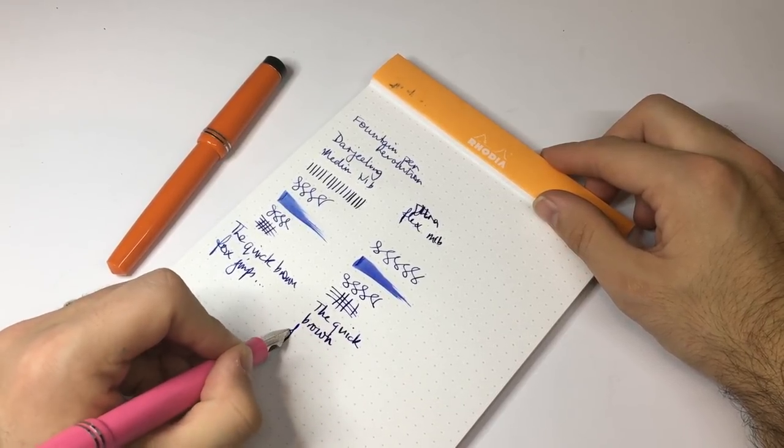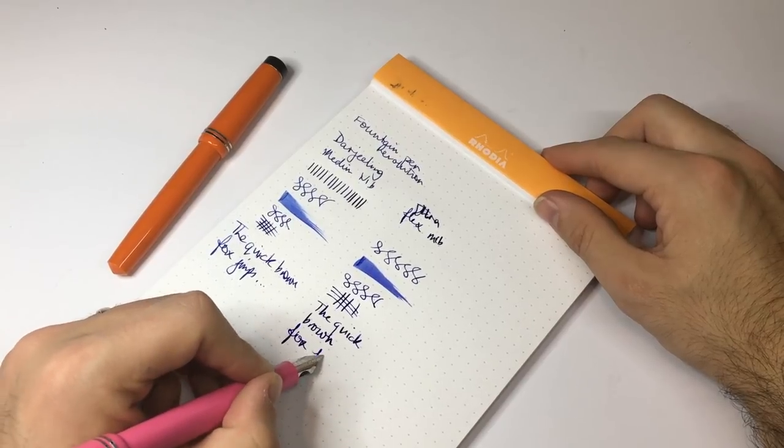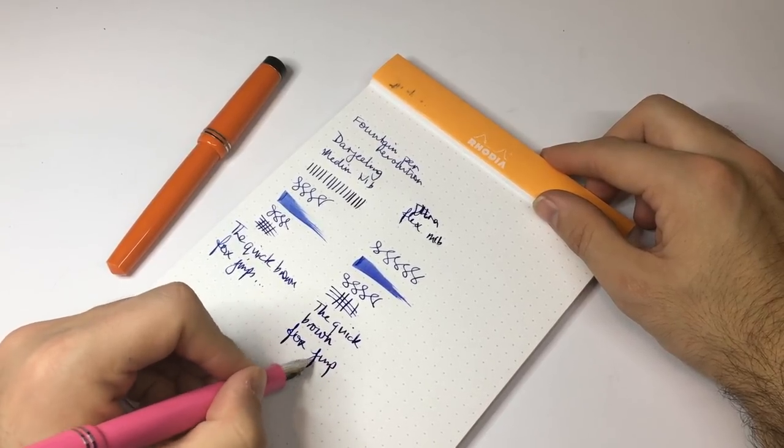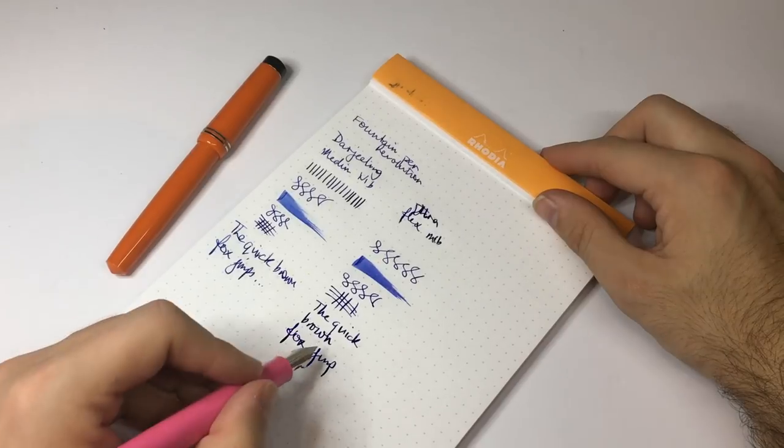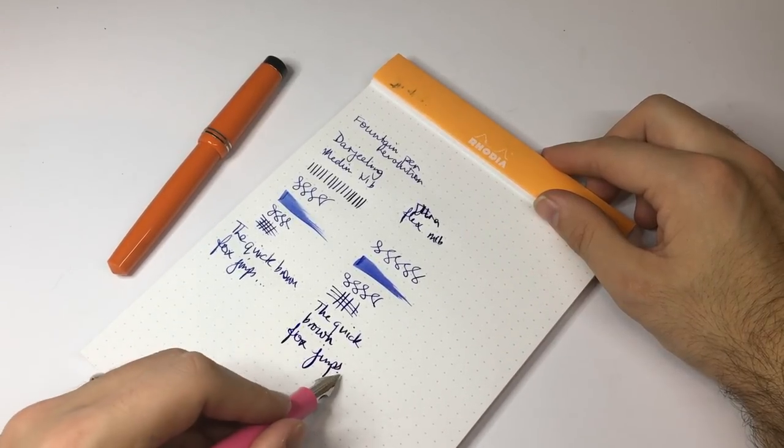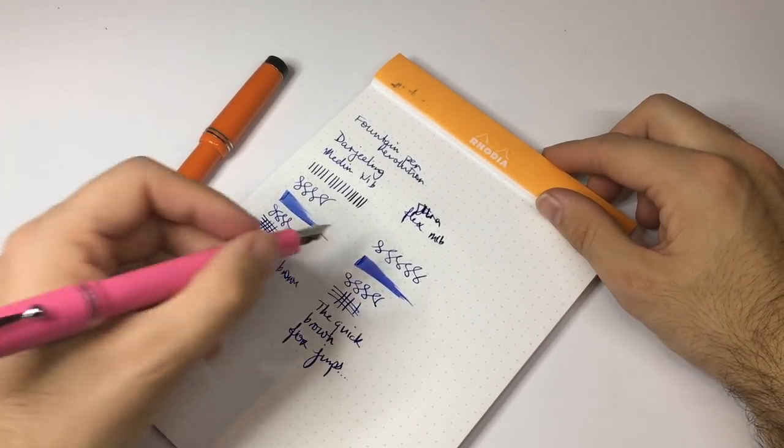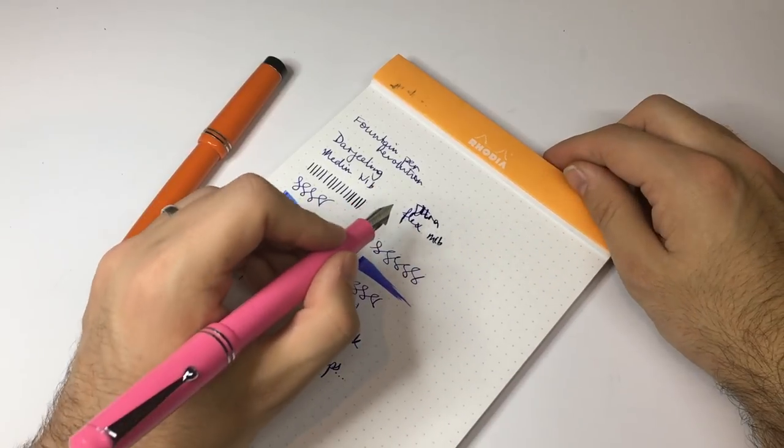You can already see in the writing that with very little pressure you're able to, you can see some natural sort of flex line coming out. You notice it really there on the loop of the j.